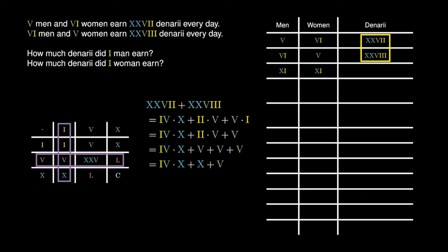Now, we have 4 tens added to 1 ten added to 1 five. This simplifies to 4 plus 1 tens plus 5, which simplifies to 5 tens plus 5. But 5 tens gives us 50, so we can take 50 plus 5 to obtain 55. Therefore, we obtain 55 denarii.